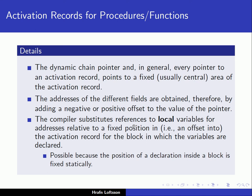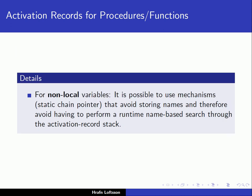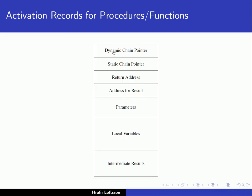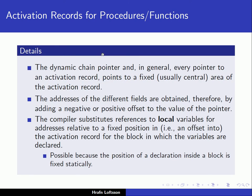Let's continue our discussion on what we're keeping in the activation records for procedures and functions. We have something called the dynamic chain pointer that points to the activation record of the previous function on the stack. Every pointer to an activation record points to a fixed area of the activation record, usually a central area.